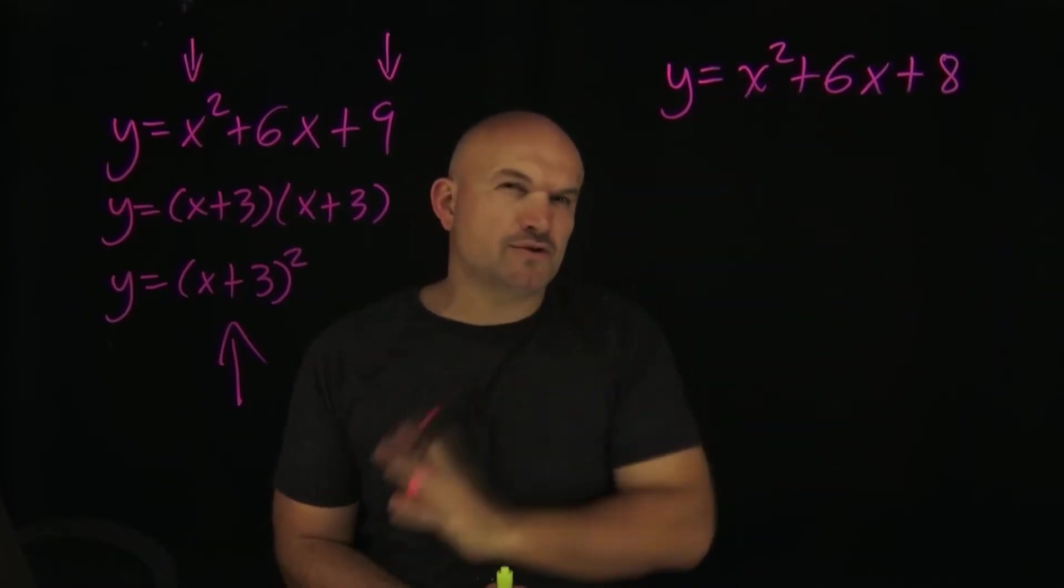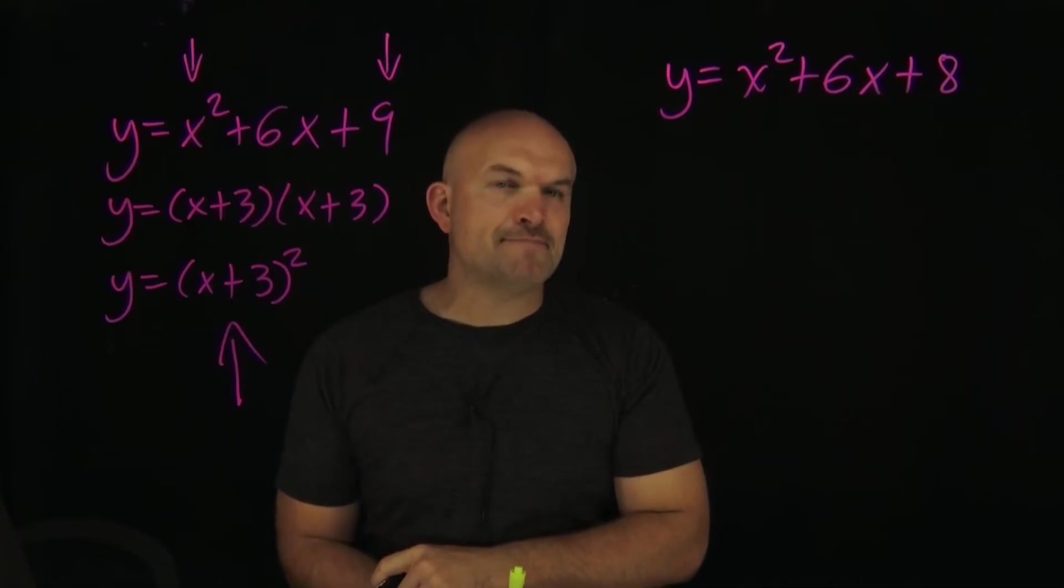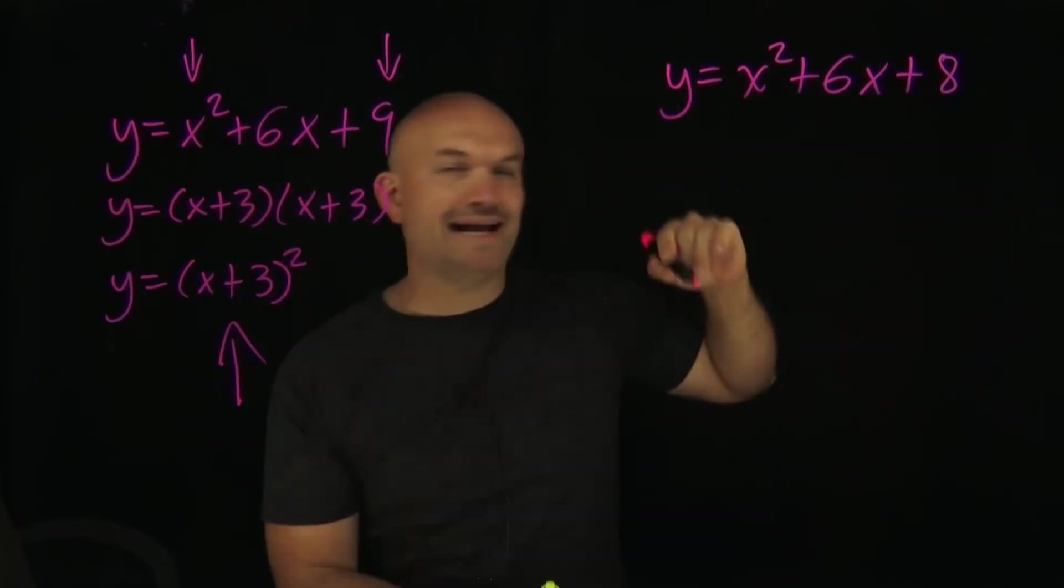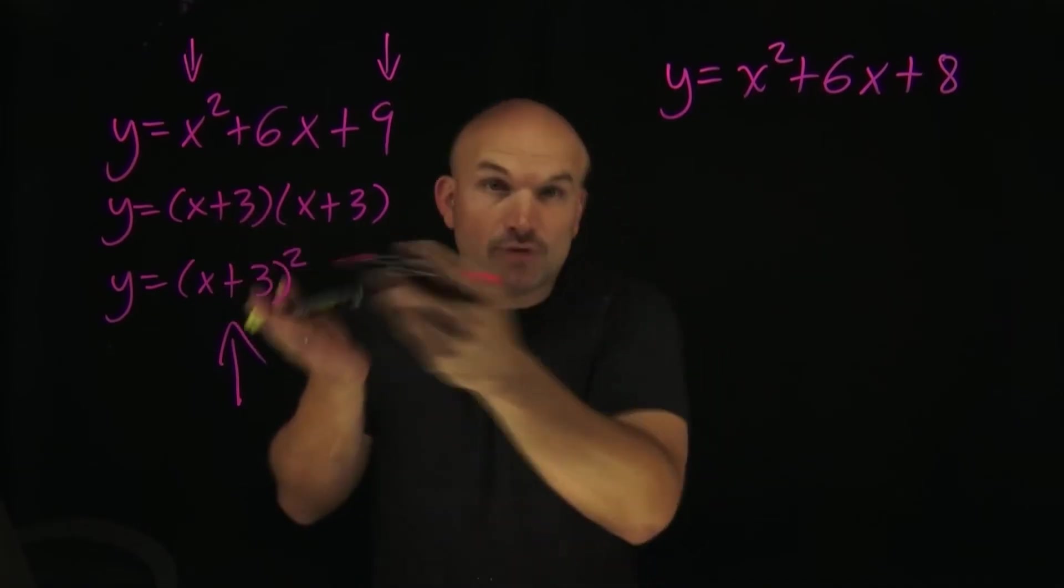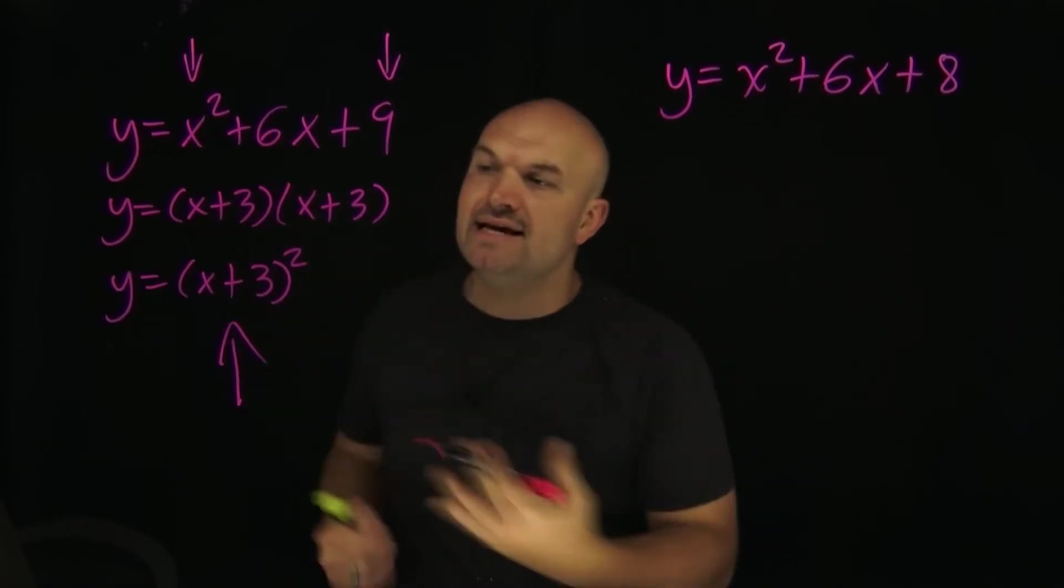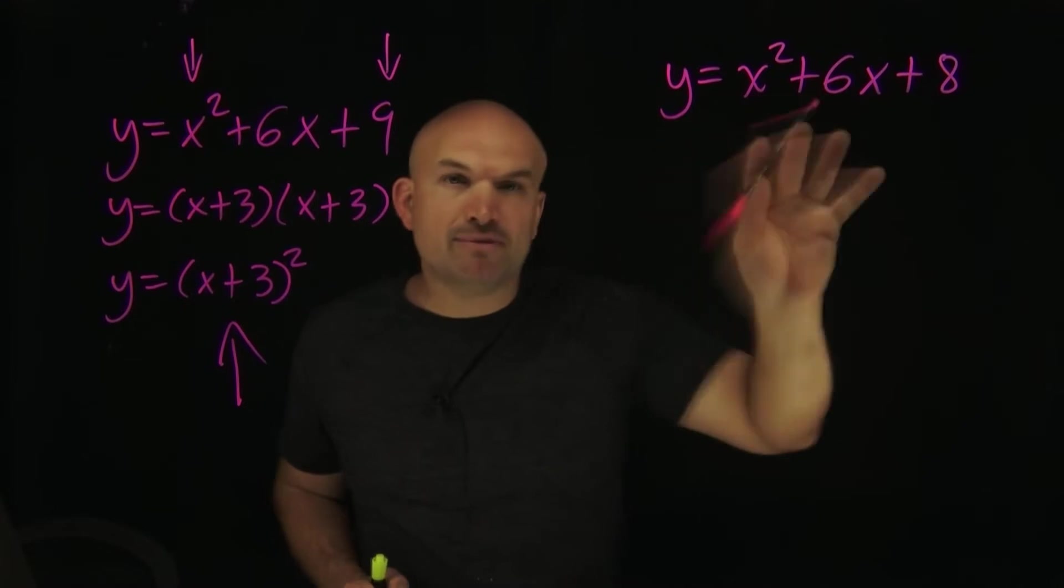One thing that I want you to think about is like, all right, if I need to take this and I need to create this binomial squared—that's what putting things into vertex form is—what number do I need?